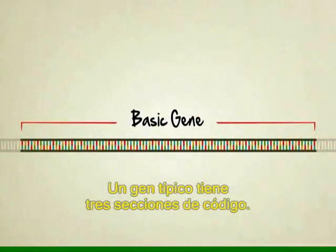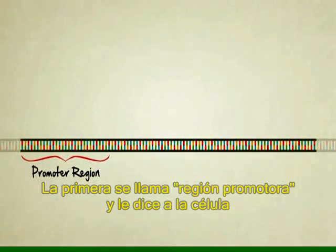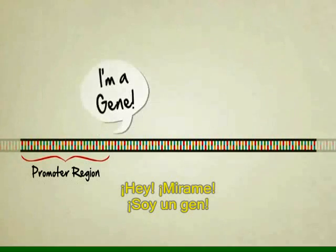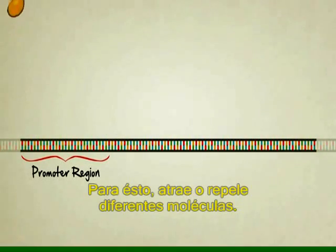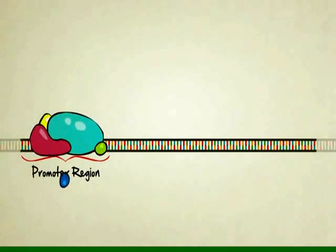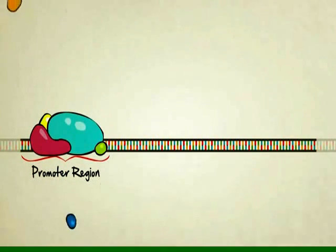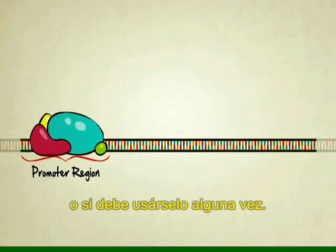A basic gene contains three main sections of code. The first stretch, called the promoter region, basically tells the cell, "Hey, look at me, I'm a gene — use me to make some proteins." It does this by attracting and repelling different chemicals. The promoter region works with these chemicals to determine how often, or if ever, the gene should be used within its mother cell.